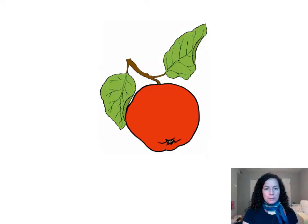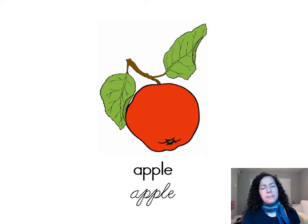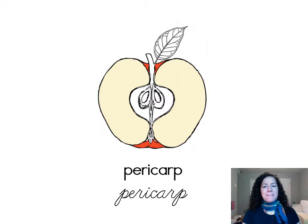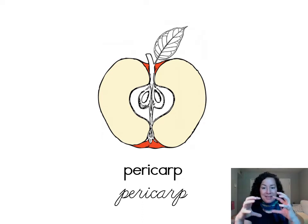This is an apple. An apple is a smooth, rounded fruit with a red, yellow, or green skin and a crisp whitish flesh that comes from a tree of the rose family. The apple has a pericarp, and the pericarp is the ripened walls of the ovary or the fruit, and it has three parts that protect the seed.